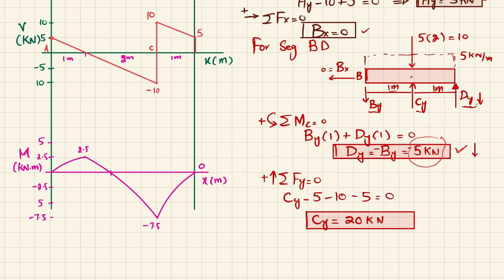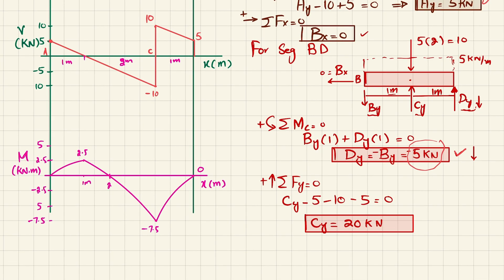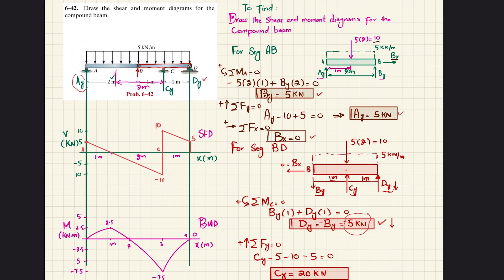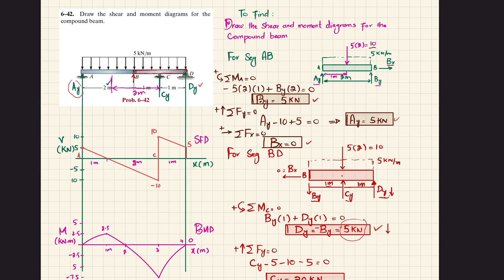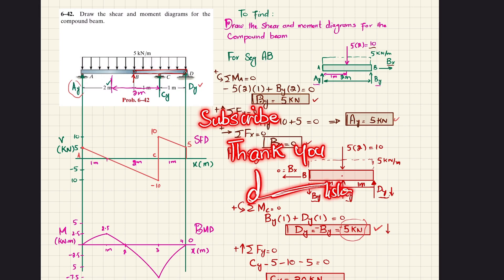The lengths are: 2 meters, then 1 meter, then total 3 meters, then 4 meters to the last point. This completes the bending moment diagram (BMD) and shear force diagram (SFD) for problem 6-42. I hope you enjoyed this video. Keep trying and solving problems like this. If you are new to my channel, subscribe and press the bell icon for notifications about the latest videos. If you have any questions, ask in the comment section. Thank you for watching.